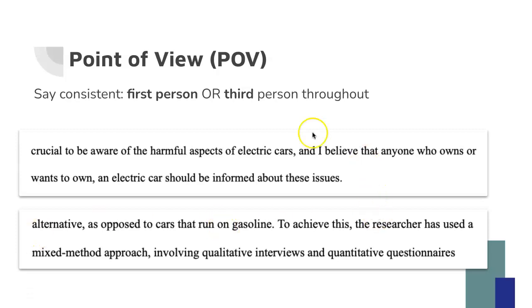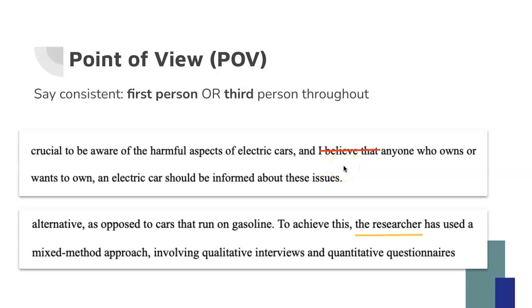In this example, a student wrote 'I believe anyone who owns a car' — fine, they're using first person — but later in the paper they say 'the researcher.' Whatever you want to do, you need to stay consistent. My recommendation: take out 'I believe' and stick with third person. Sometimes it can also make your writing sound stronger if you take out phrasing like 'I believe,' because you're the one writing the paper so we can assume that what you're writing is what you believe.